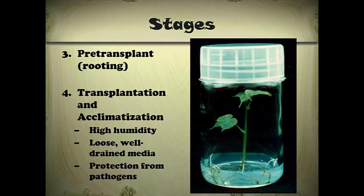The final stage is transplantation and acclimatization. This is when we actually remove our plant from tissue culture. During this stage, the plant is very vulnerable because up until now it's been growing in the perfect environment. It doesn't really have to photosynthesize because there's already sugar in the media, there's no water stress, and there's nothing it has to adapt to. When you remove it from that environment, you have to treat it very carefully or it will die.